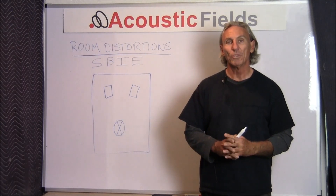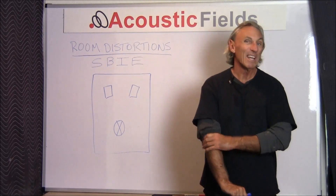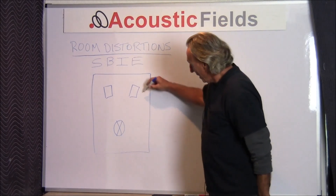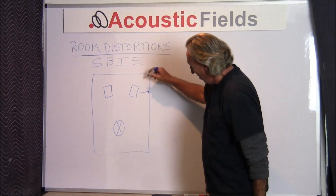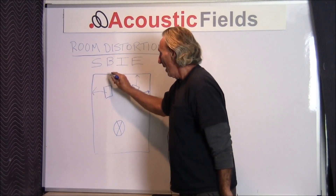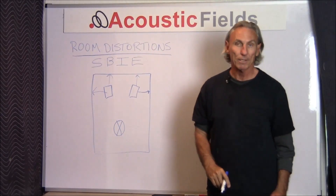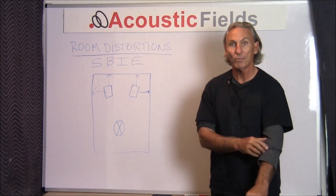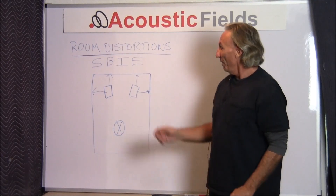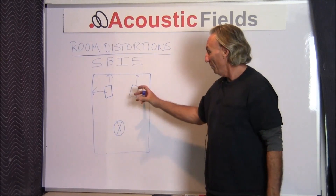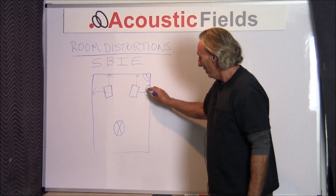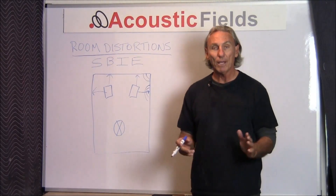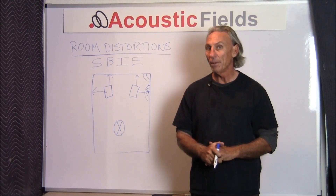Our second room distortion has a long name: SBIE, which stands for speaker boundary interference effect. It's an acronym for the issues that occur between our speakers and our room boundary surfaces. These can produce comb filters, which we'll discuss next, and also pressure areas created by low frequency energy that gets trapped and built up in these areas. The distance from the speaker or sound source to the room boundary surface has a huge impact on what you hear.